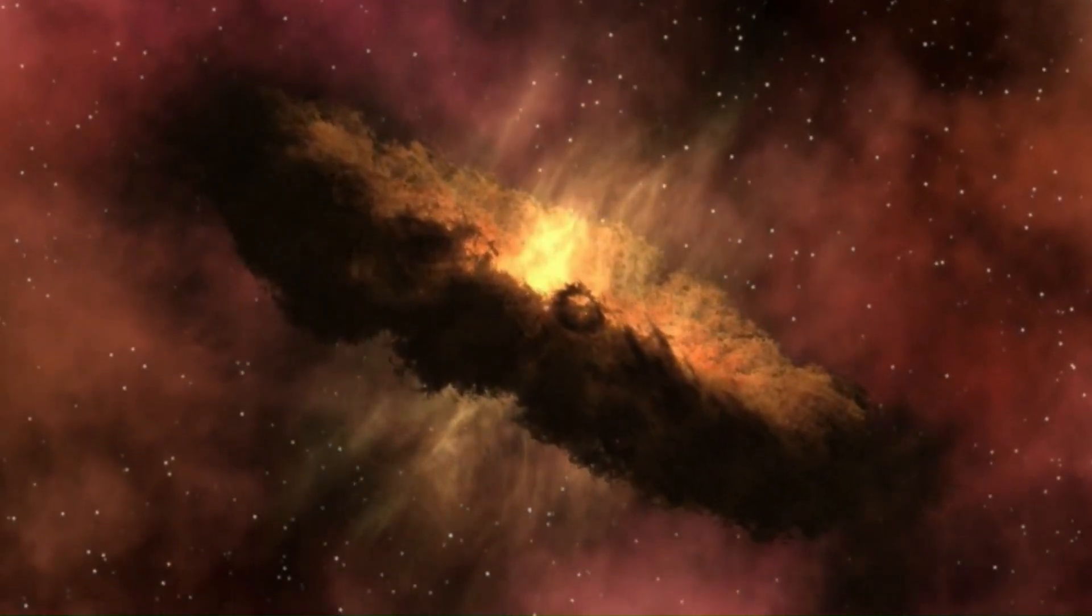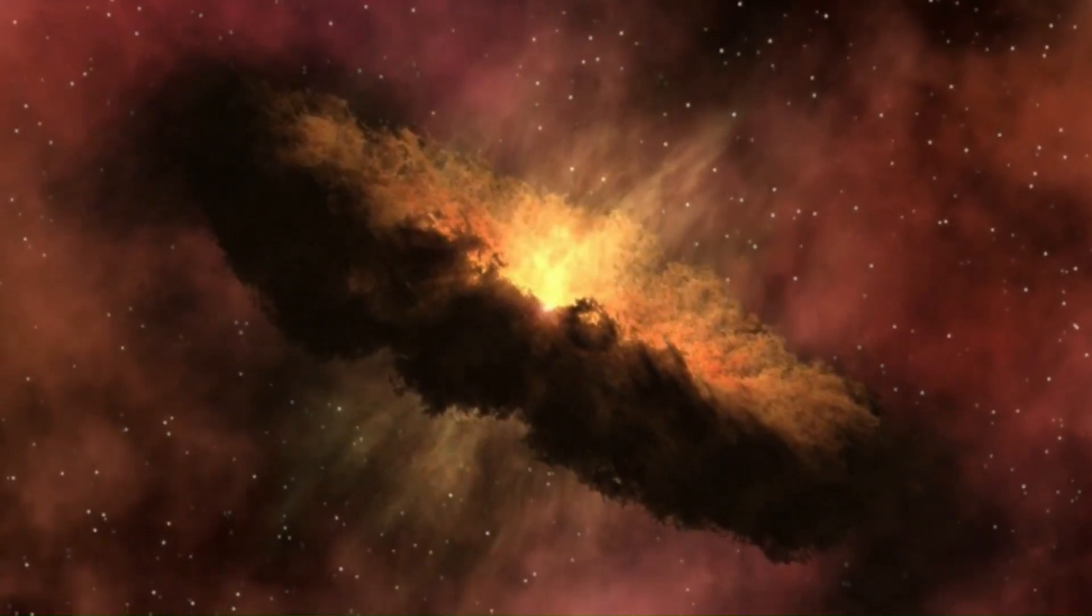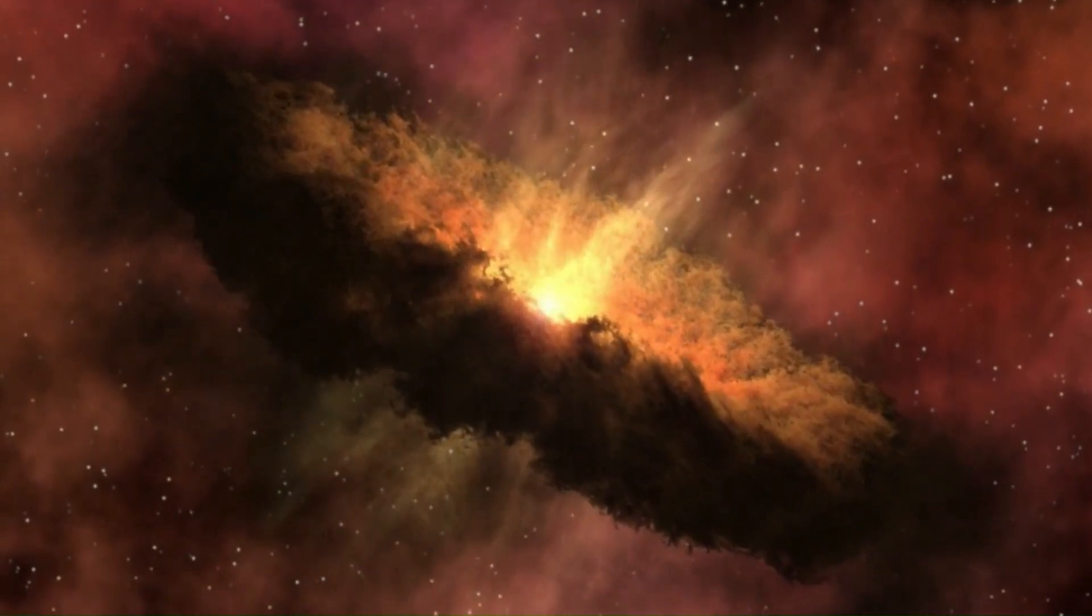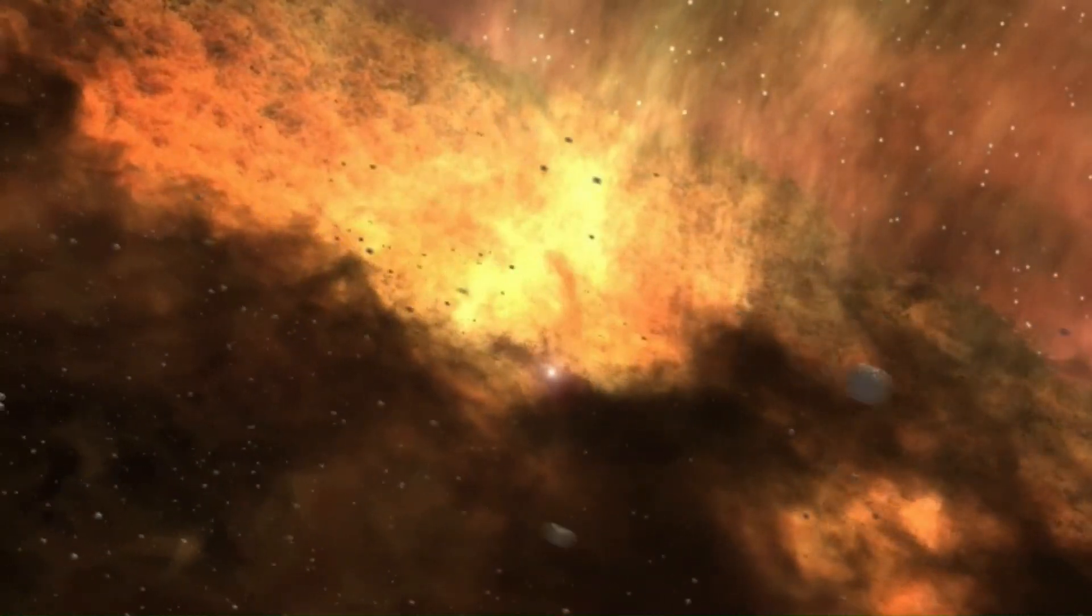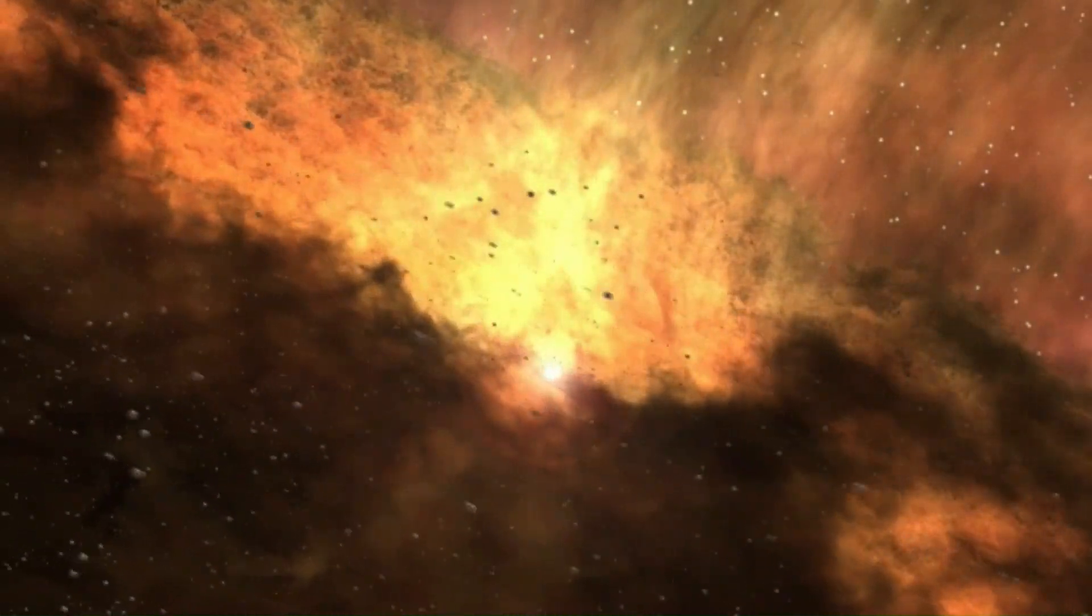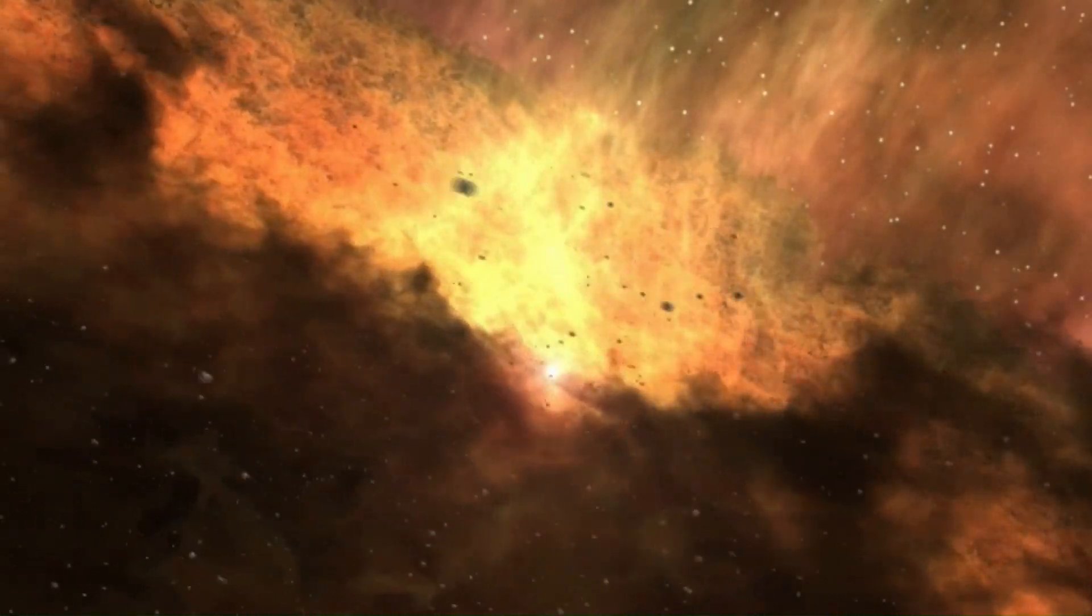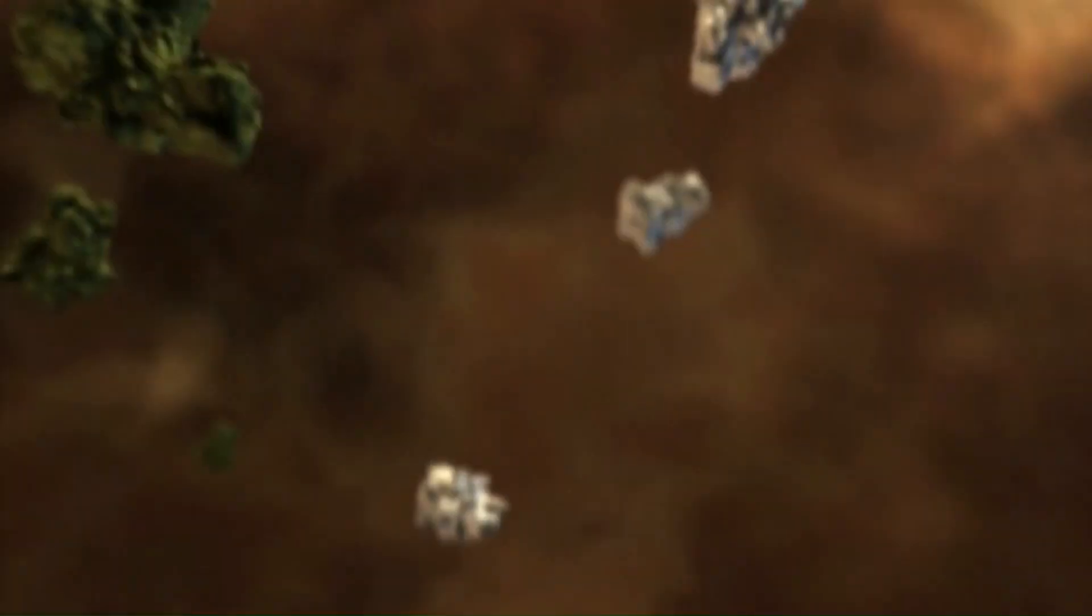What we see here is a protoplanetary disk surrounding a young star. Within the disk, tiny dust grains accumulate layers of ice over thousands of years. These cosmic snowflakes are swept up by forming planets, delivering key ingredients for life.